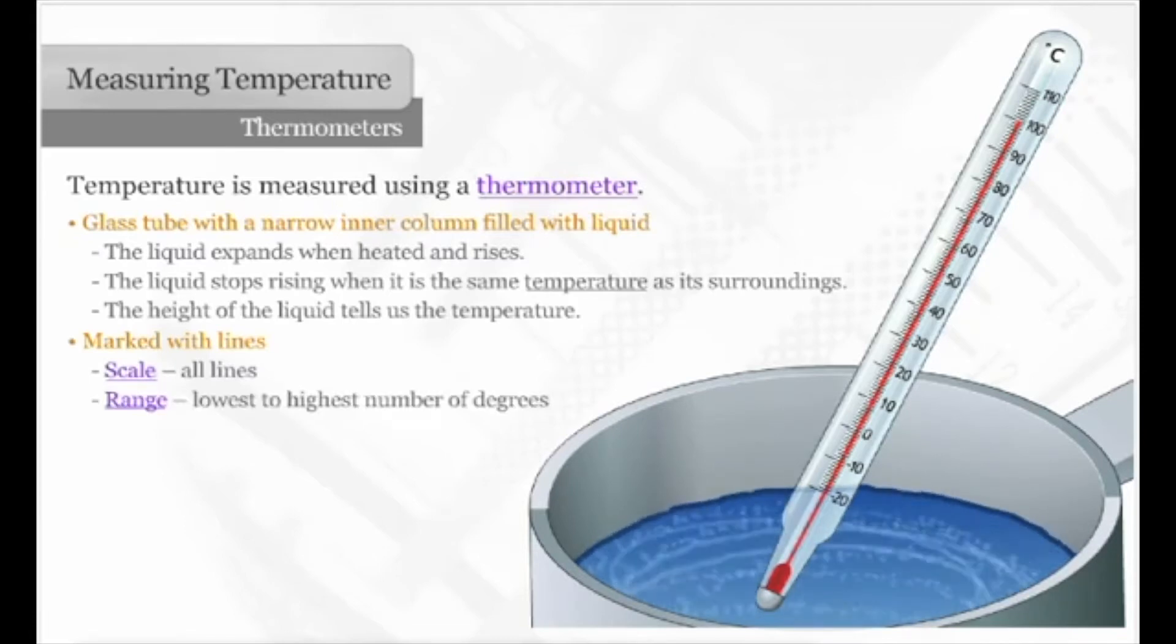The range of a thermometer is the number of degrees from the lowest number on the scale to the highest number. Each line is a division. Some thermometers have numbers corresponding with each line. Too many numbers make the thermometer difficult to read. So most thermometers only have numbers that correspond to some of the divisions.